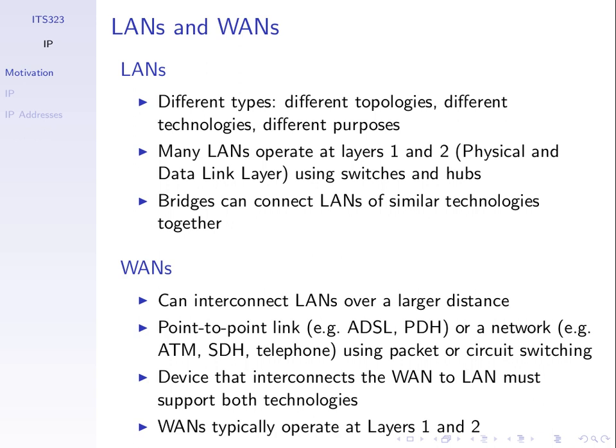Different organisations will choose the best technology to support their requirements. For example, at SIT we have wired Ethernet inside our LAN, especially to PCs in the lecture rooms, labs, and offices. We also have wireless LAN for students and staff. Some other organisation may use a different technology — a factory down the road might have an old token ring network, or a new upgraded fibre-based LAN, depending on their requirements.